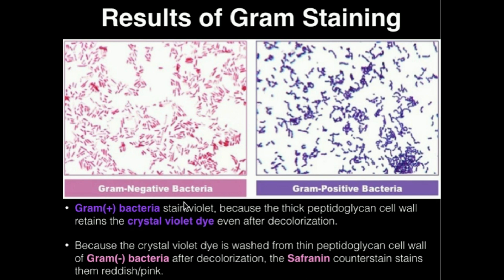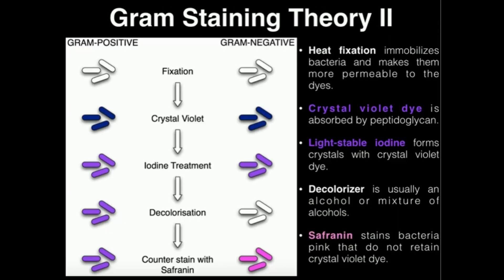If they do not do whatever we want — if they don't absorb the dye — it's a negative result. Because gram-negative bacteria do not absorb the crystal violet dye after decolorization, they're gram-negative. Because of the safranin, they actually stain pinkish-red, which you can see here on the left. Hopefully this theory behind gram staining makes sense. Be sure to watch the demonstration videos where we'll look at both heat fixation and the actual process of doing the gram stain. Thank you for watching.